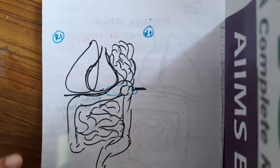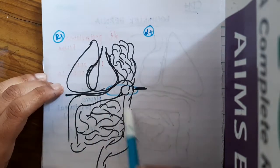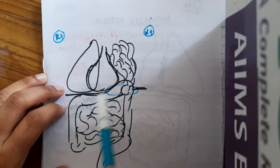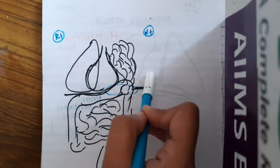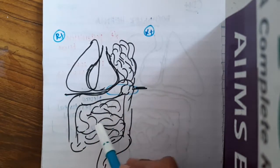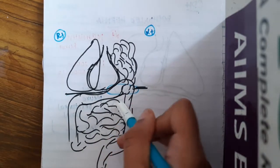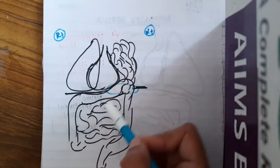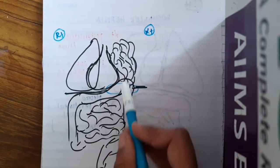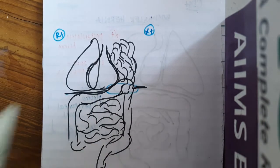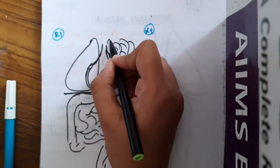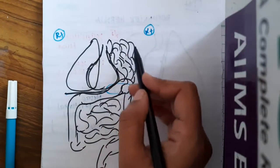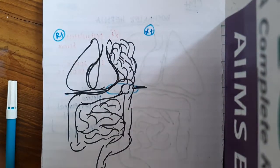Through this defect, the structures of the abdomen on the left side — like the transverse colon, loops of the intestines, stomach, and spleen — can herniate into the thorax. The lung which is normally present has been collapsed because of these bowel loops which are herniated into the thorax.